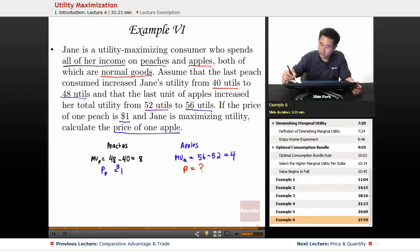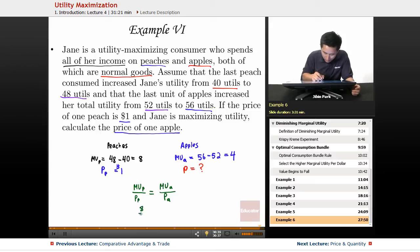What we're going to do is take the marginal utility of a peach over the price of a peach and set that equal to the marginal utility of an apple over the price of an apple. We know that it's 8 over 1, and we know the marginal utility is 4 over P_a.